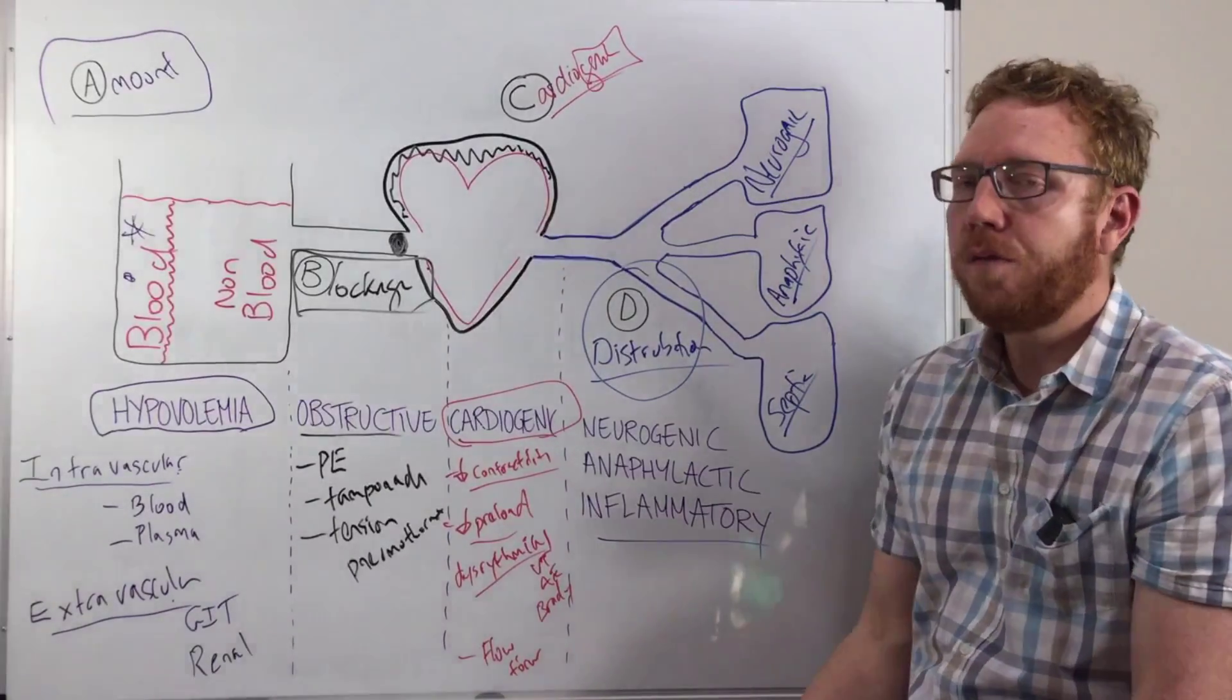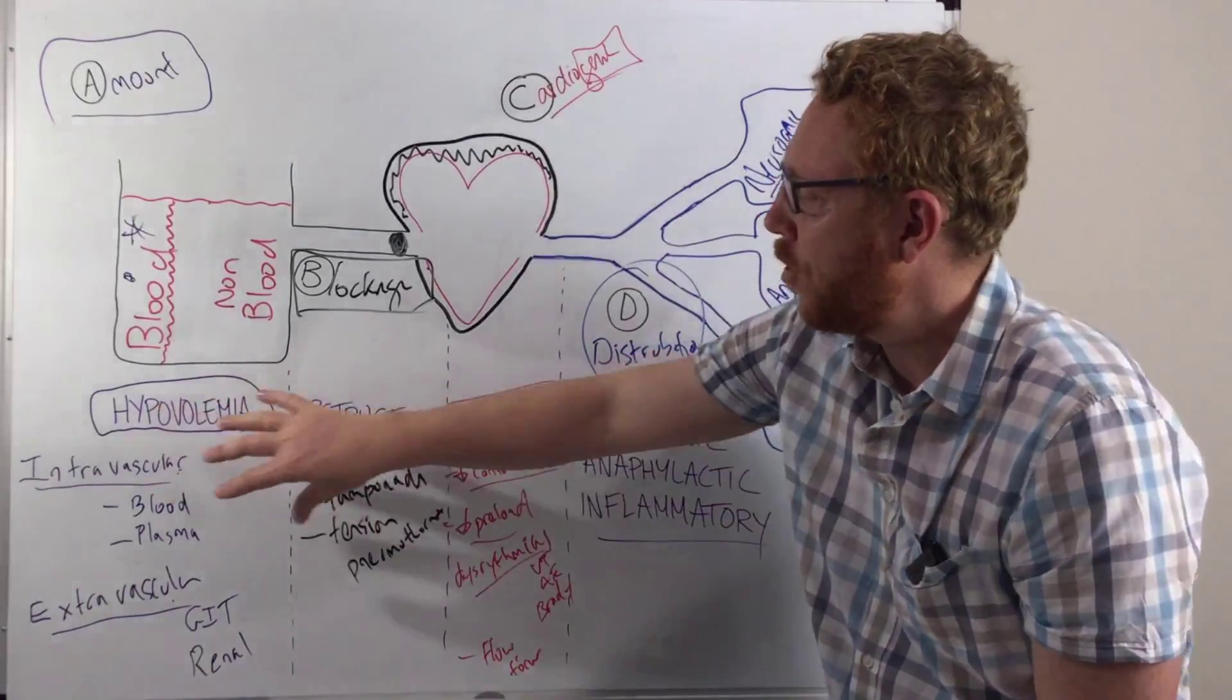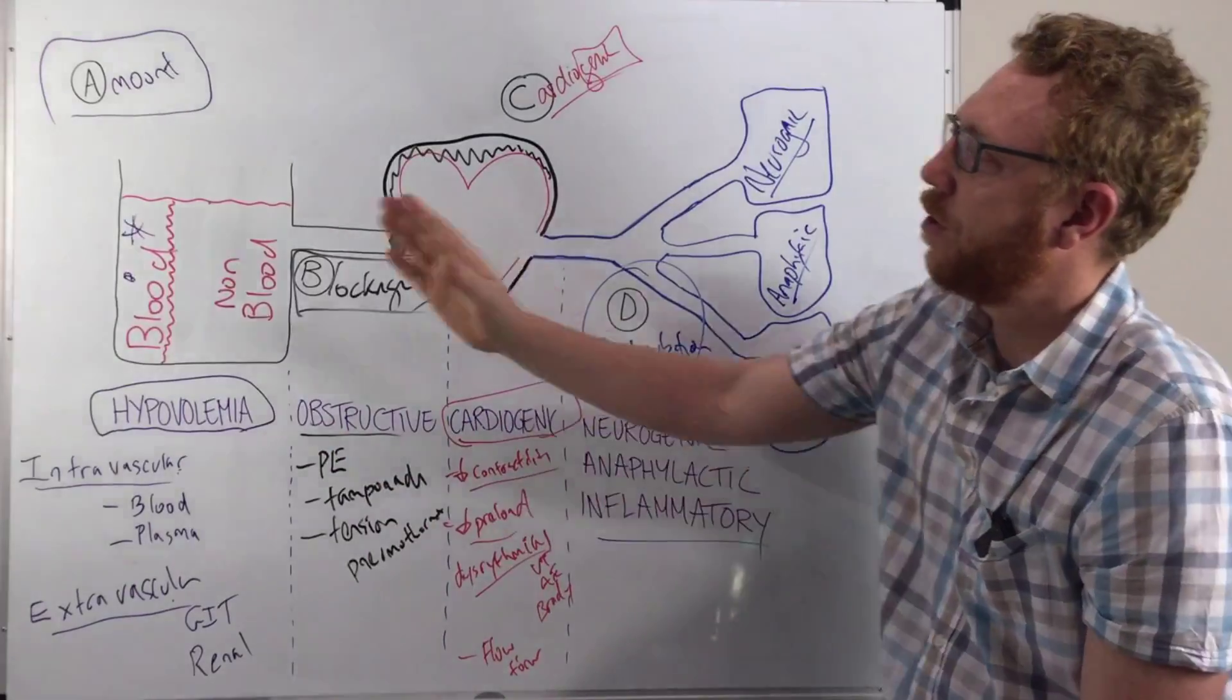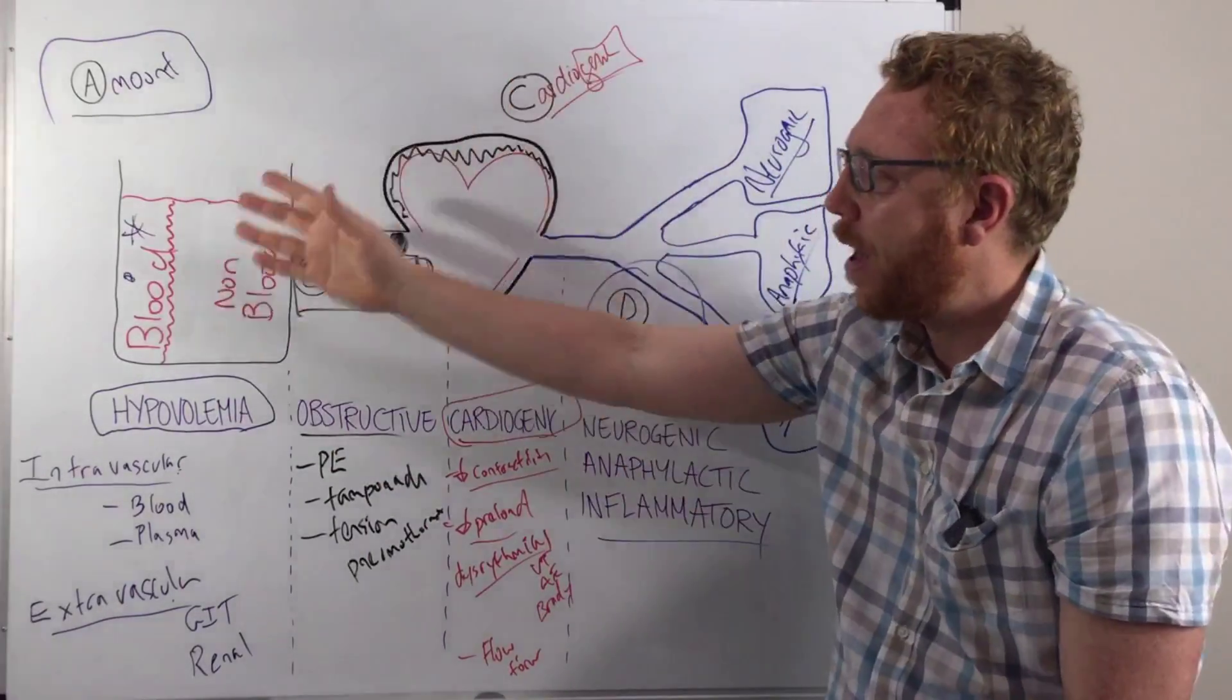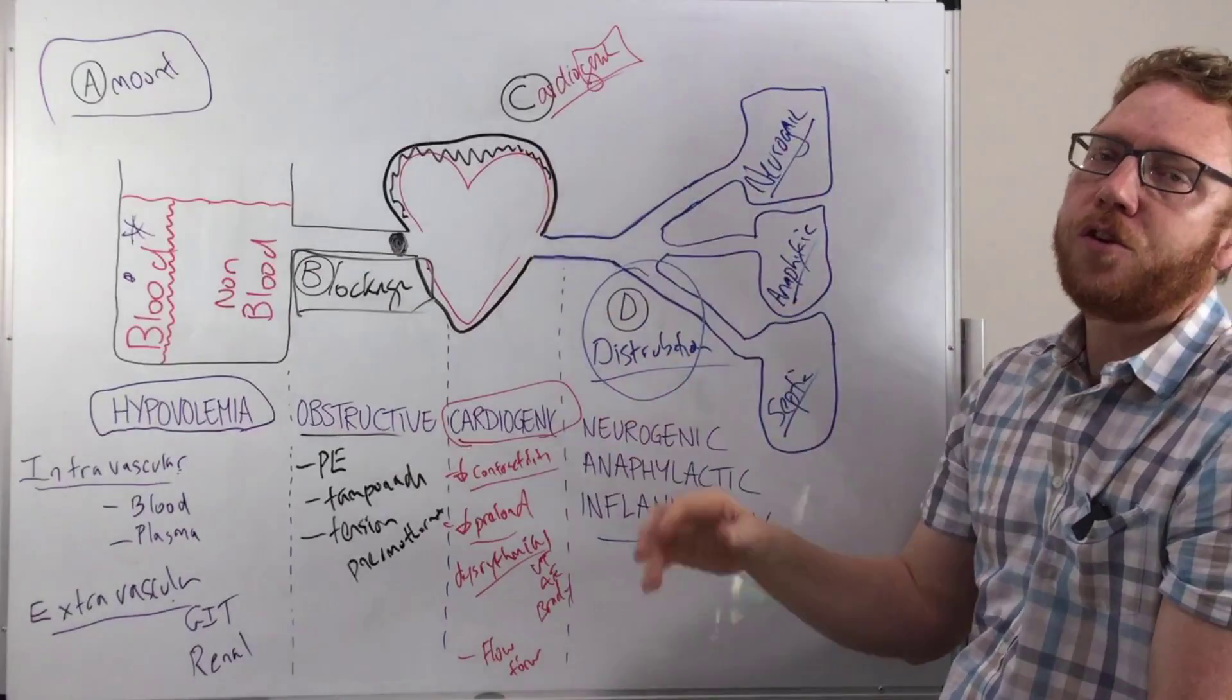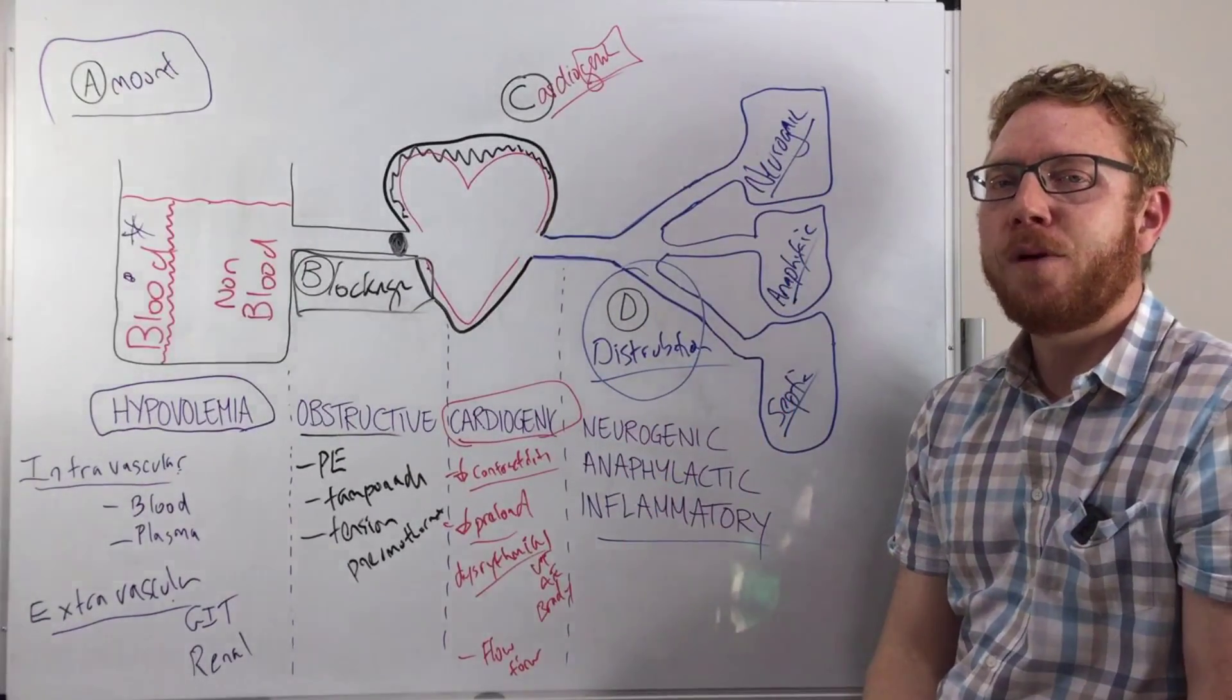So there we have it. Hopefully now you can see when you categorize the different causes of shock, if you just do A, B, C, D, amount, blockage, cardiogenic, distribution, that will be a much easier way to remember.